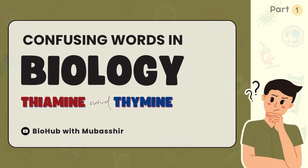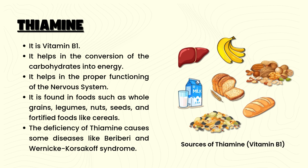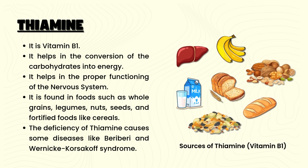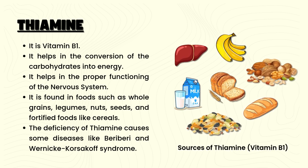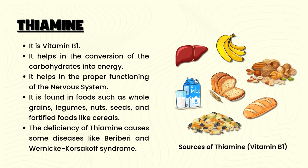Part 1. Let's go with thiamine first, which is spelled T-H-I-A-M-I-N-E. It is vitamin B1. It helps in the conversion of carbohydrates into energy, and it helps in the proper functioning of the nervous system.